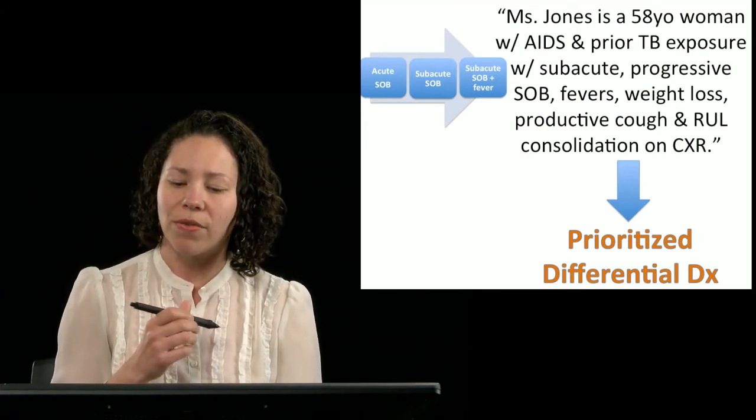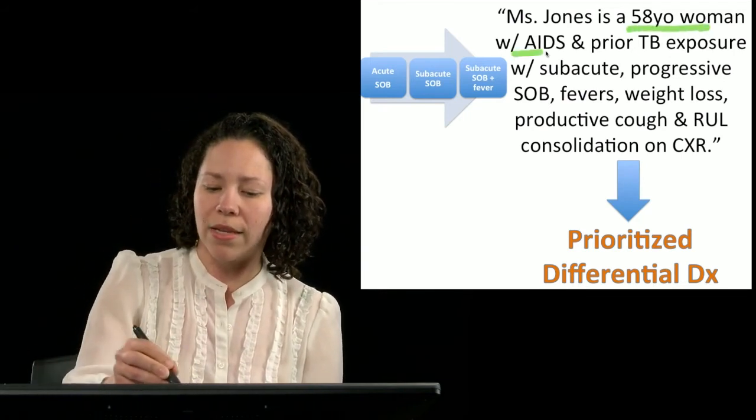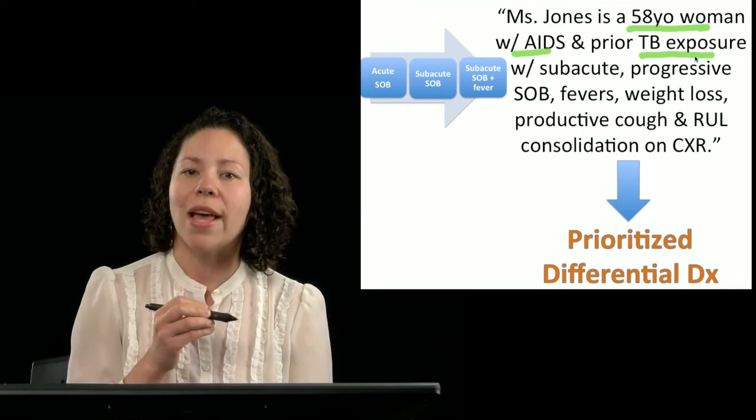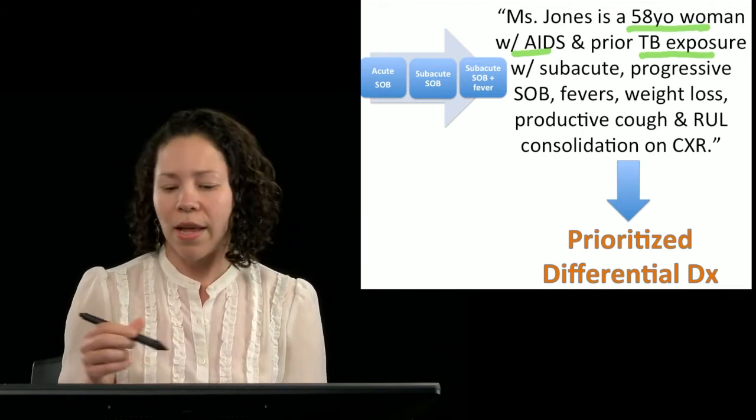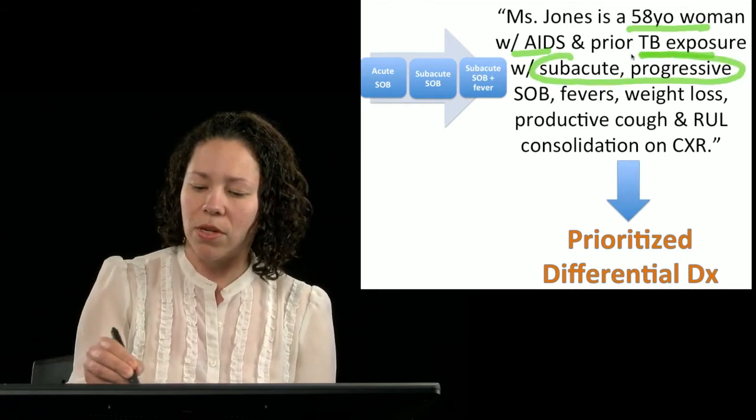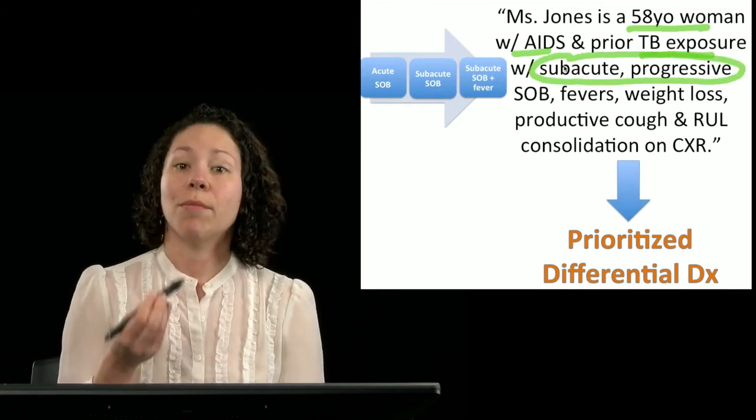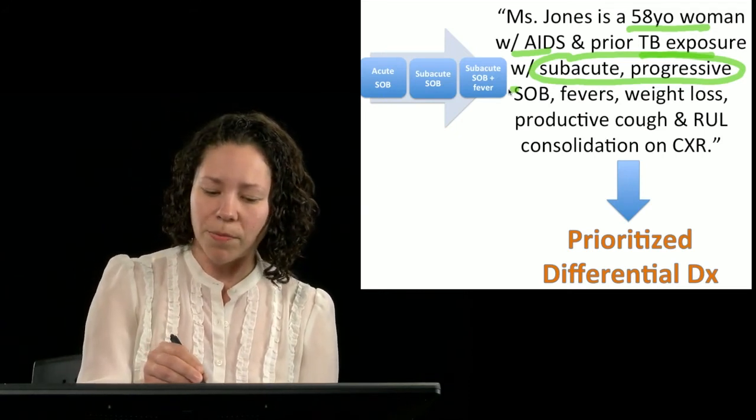So the first thing we have is she's a 58-year-old woman with AIDS and TB exposure. So that is her epidemiology and her risk factors for disease. Then we have that she has subacute progressive symptoms. So now we have a time course as well as a tempo of her symptoms.